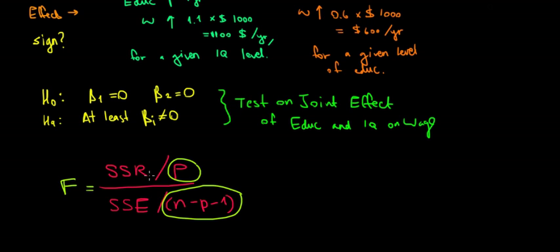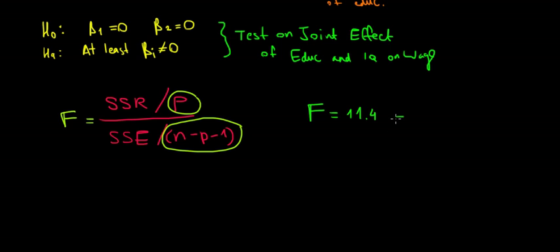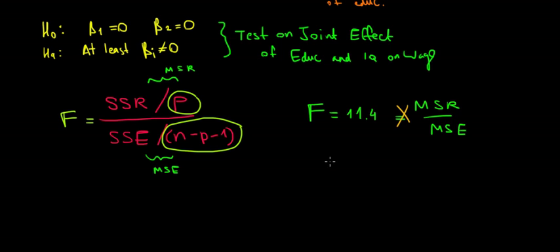We're testing the ratio of how much variation is explained by the regression relative to how much is not explained. Intuitively, if the F value is high — say 11.4 — we're saying there is 11.4 times more variation explained by the model than not explained. Through a cross product, MSR equals 11.4 times MSE, meaning the mean sum of squares explained by the regression is 11.4 times higher than the mean sum of squares from the error term.